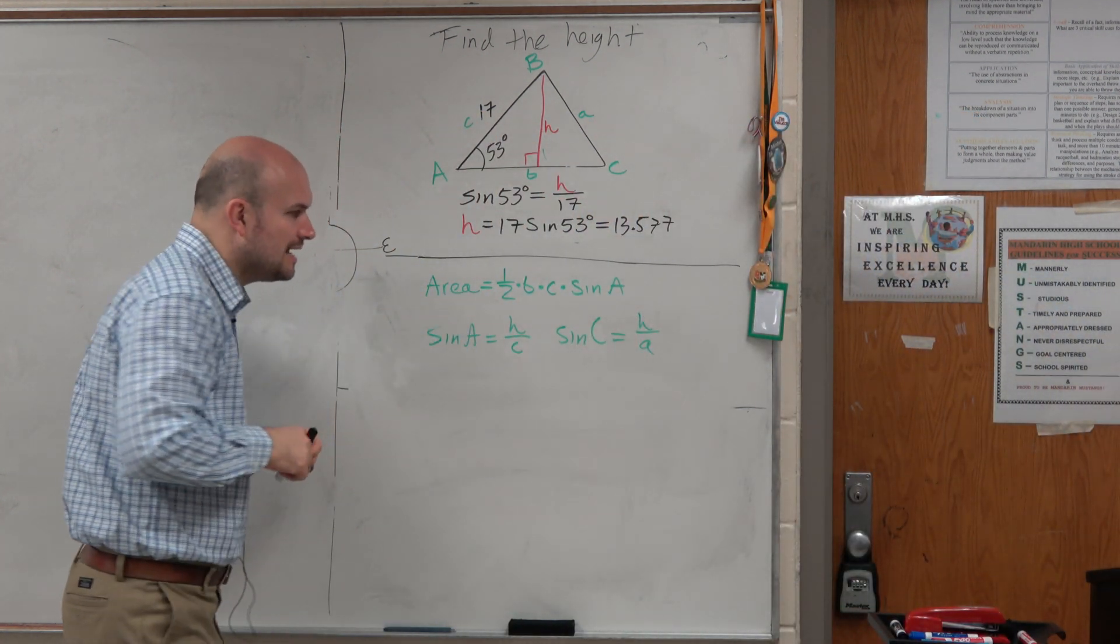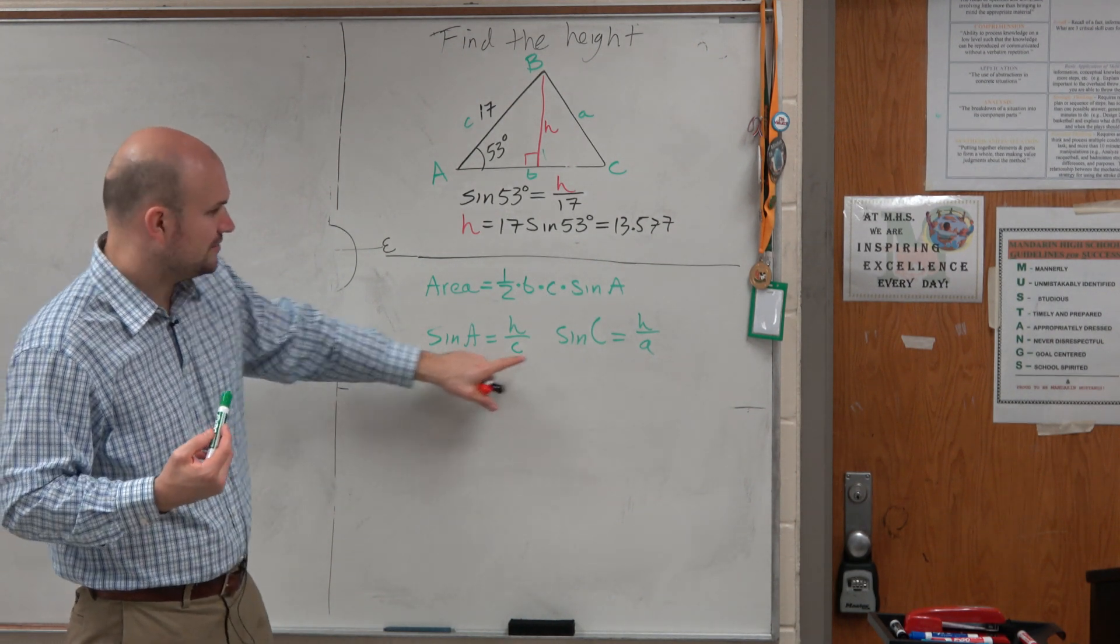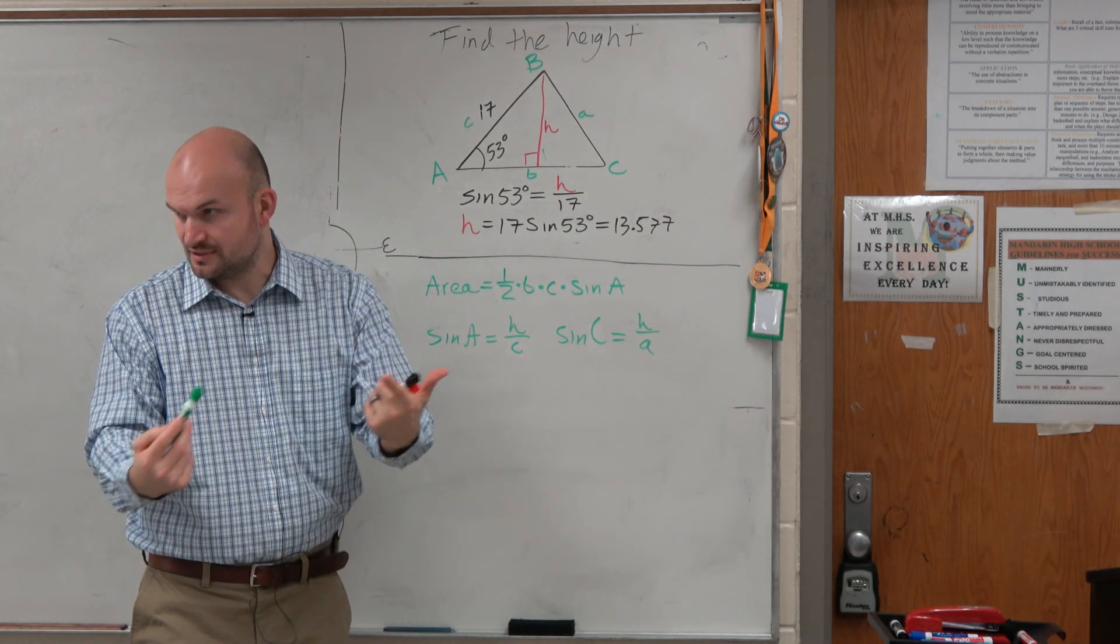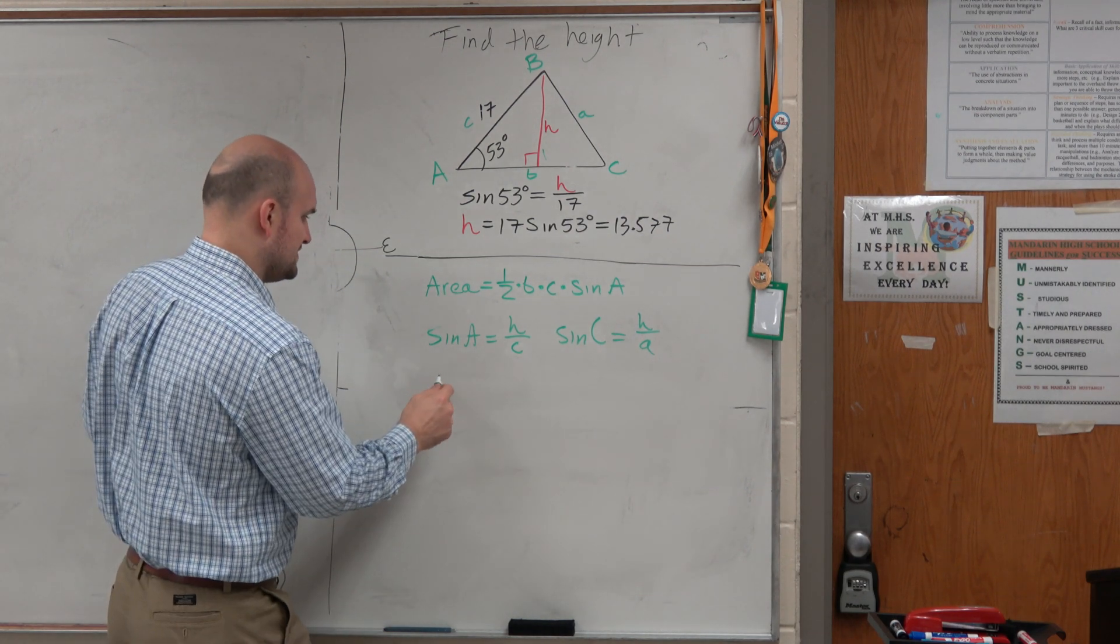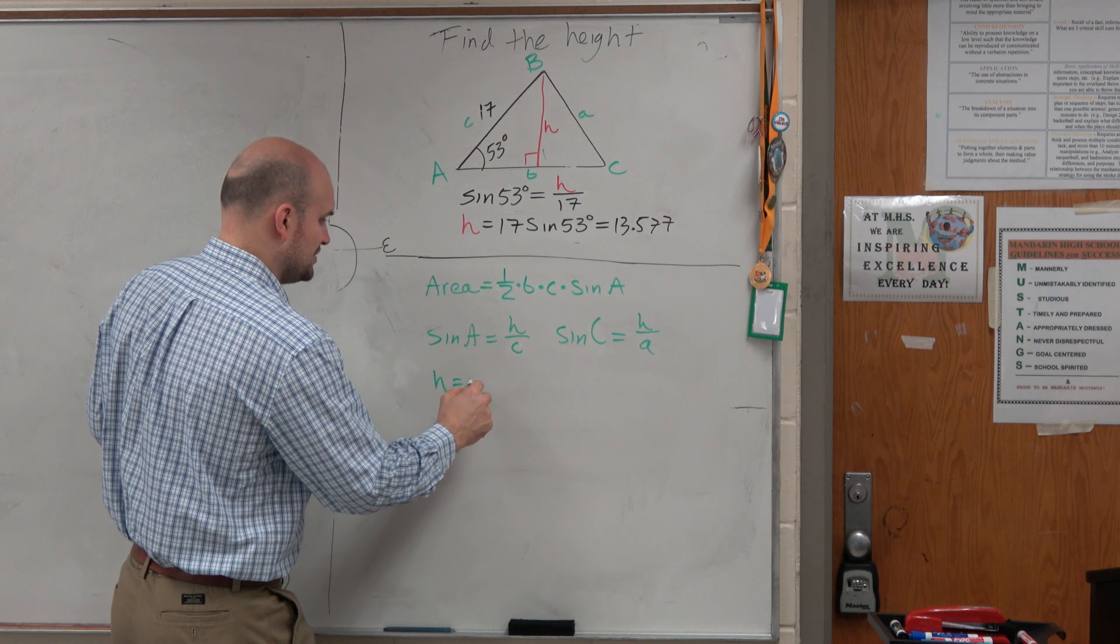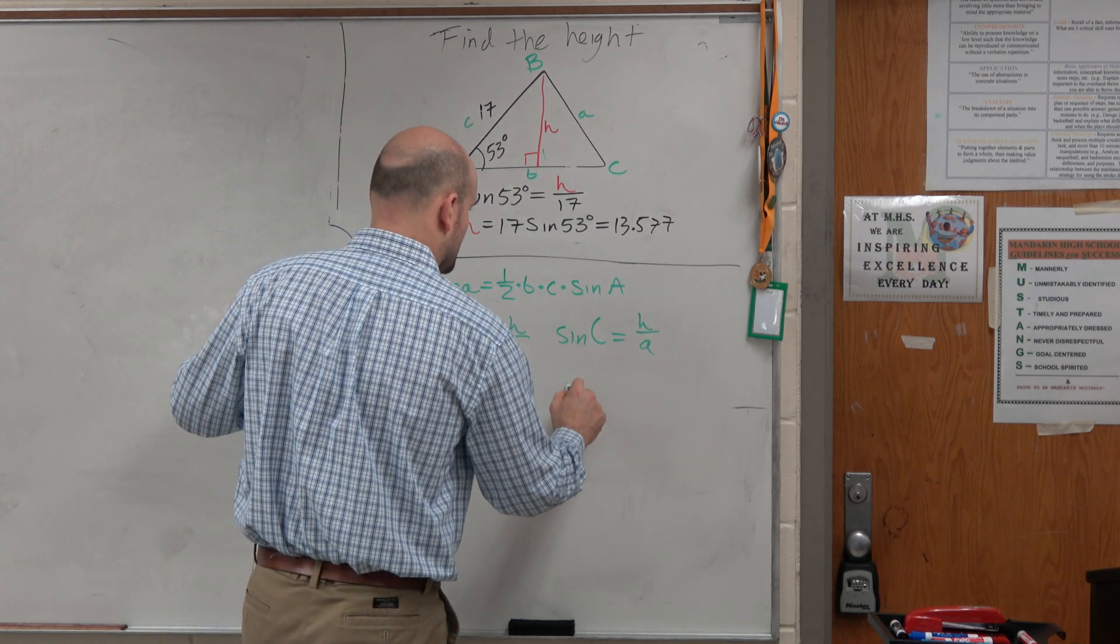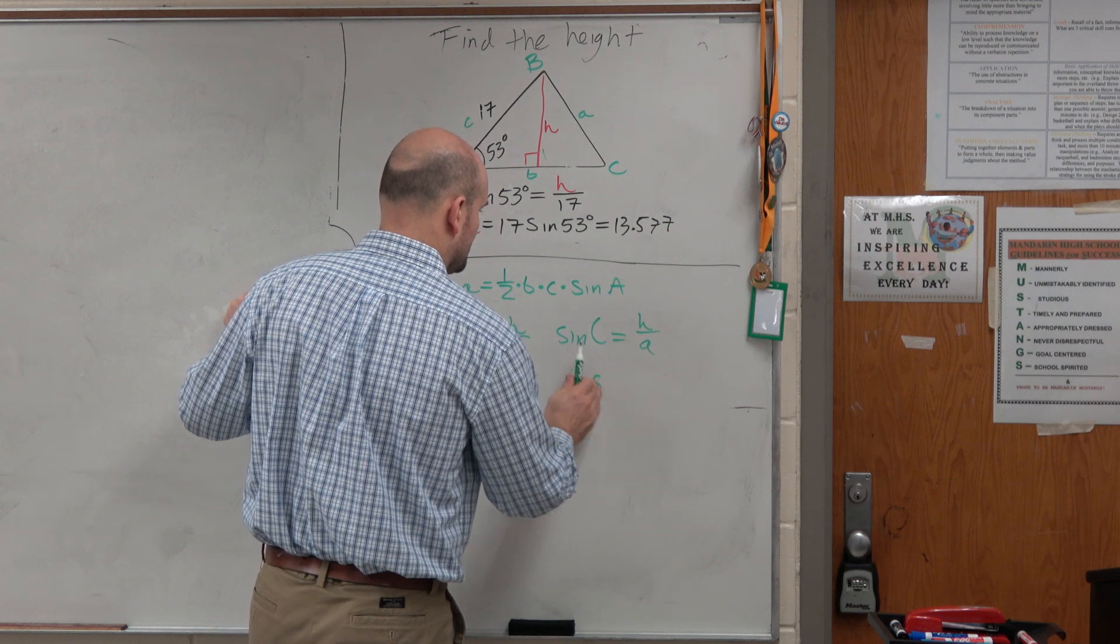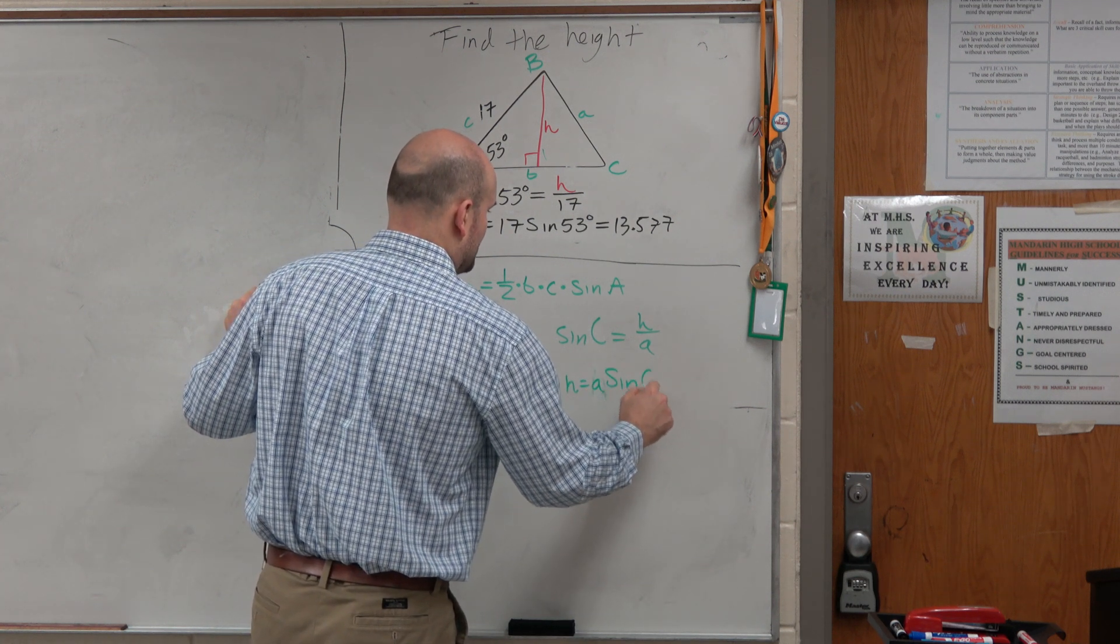Now, they both have an h in common. That's the only thing they really have in common, right? Because that's a capital A, which is an angle, and that's a lowercase a, which is a side. So those aren't the same. So why don't we solve for h in both cases? If I solve for h, I get h equals c times the sine of A. And here, I get h equals a times the sine of C.